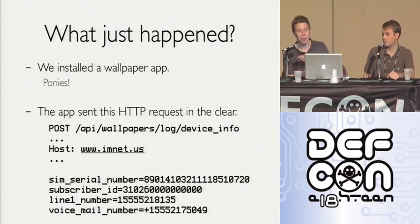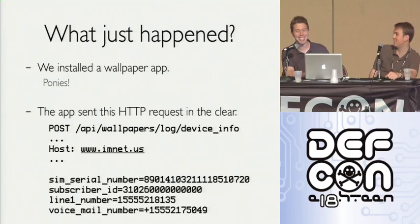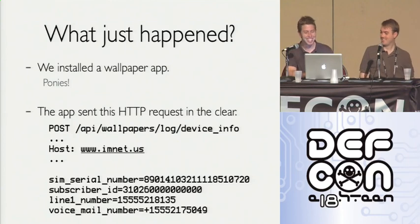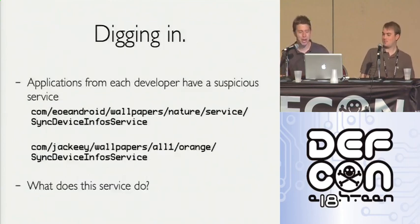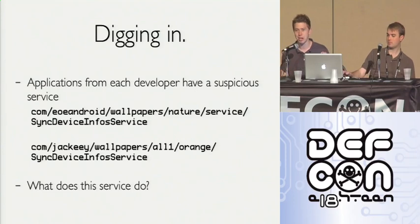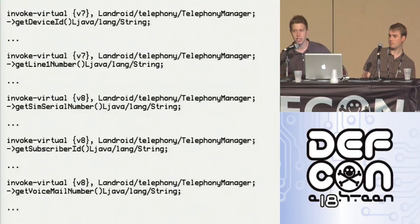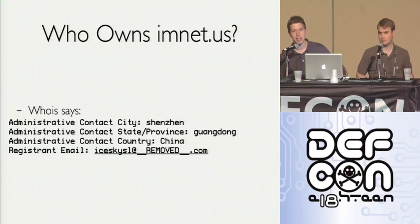Why do they need my voicemail number? On some Android phones you can actually insert your password into the default voicemail number — for example, pause, pause, 1337. We did some disassembly on the application and found that nearly all these applications had the same class. The App Genome Project lets us ask this question fairly easily without manually reverse-engineering every application. The disassembly showed: device ID, getLine1Number, SIM serial number, subscriber ID, getVoicemailNumber — these are all the Android APIs accessing the data we saw being sent.